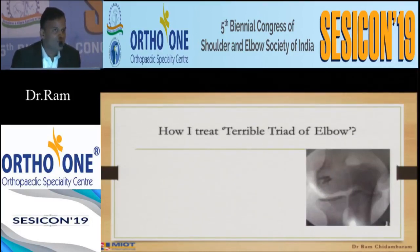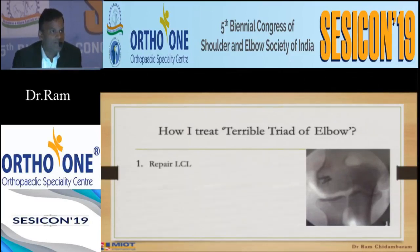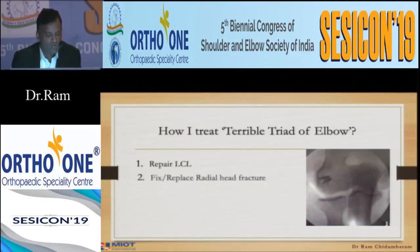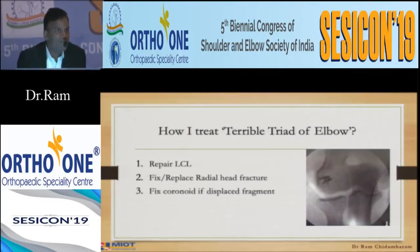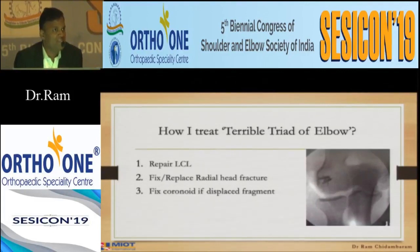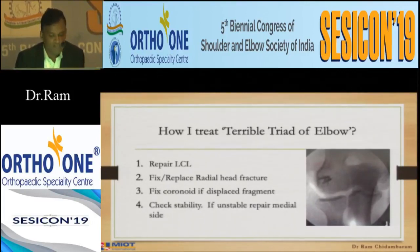Here is my principle for how I approach the terrible triad elbow. Number one: repair the lateral collateral ligament — it's a must. Number two: fix or replace the radial head, which will stabilize the elbow. Three: fix the coronoid if there is a displaced fragment; if it is not displaced you can leave it alone. Then check stability — if it is still unstable, repair the medial side.